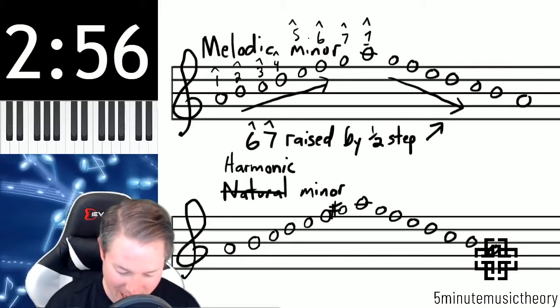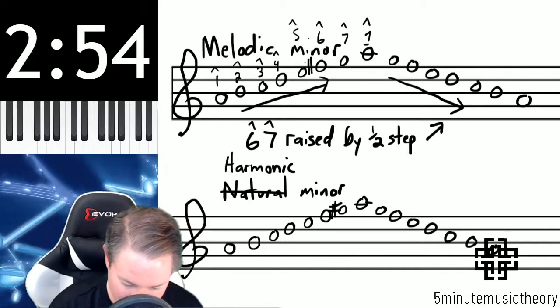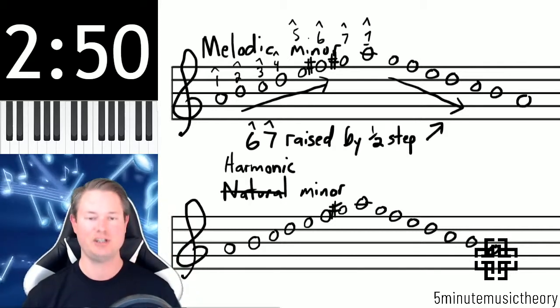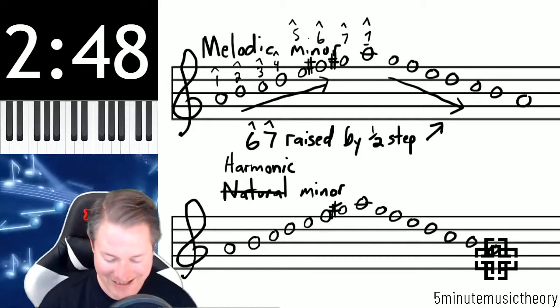To raise them by a half step, since they're naturals, we turn them into sharps: F sharp and G sharp. And then on the way down, six and seven are back to the natural minor.